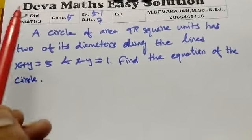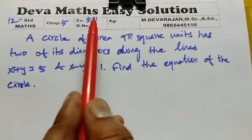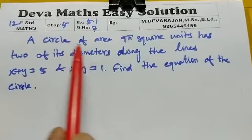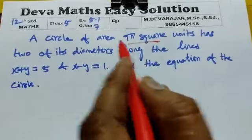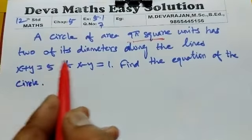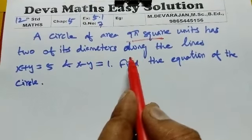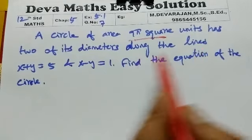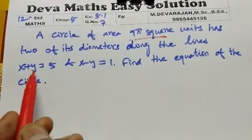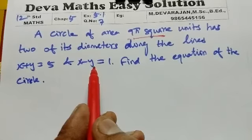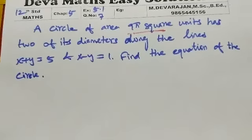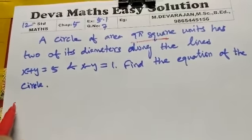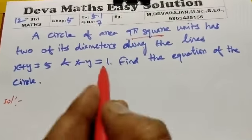Hi students, this is Deva. Now we are going to solve chapter 5, exercise 5.1, question number 7. A circle of area 9π square units has two of its diameters along the lines x plus y equal to 5 and x minus y equal to 1. Find the equation of the circle.